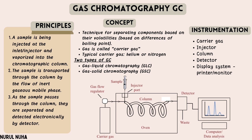There are three principles of gas chromatography: first, a sample is injected at the injector and vaporized into the chromatographic column; second, the sample is transported through the column by the flow of an inert mobile phase gas; and third, as the sample passes through the column, components are separated and detected electronically by the detector. The concept is that gas chromatography is a technique for separating components based on their volatilities and differences in boiling point. There are two types: gas-liquid chromatography (GLC) and gas-solid chromatography (GSC). The five components of instrumentation are: carrier gas, injector, column, detector, and display system or printer and monitor. Attached below is the diagram of the gas chromatography instrument.